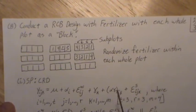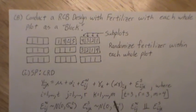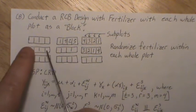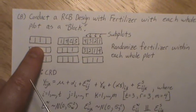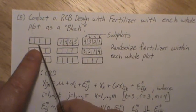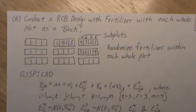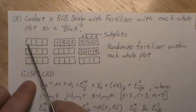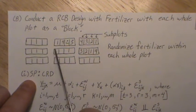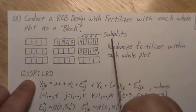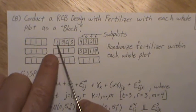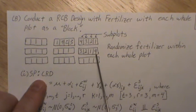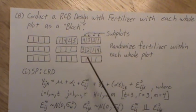We take the whole plots — whether from the completely randomized design or the randomized complete block design — and randomize fertilizer within each whole plot, treating each whole plot as a block. So we randomize the four fertilizer treatments within each subplot: for example, fertilizer 1, 4, 2, 3 in one whole plot; 4, 3, 2, 1 in another; and 3, 2, 1, 4 in the third. They're randomly sprinkled in there.